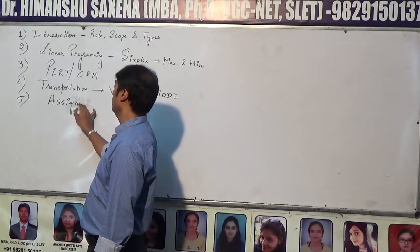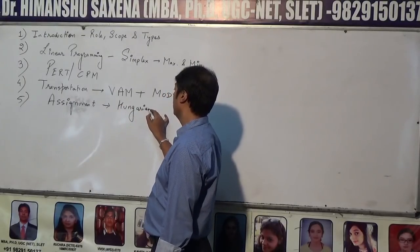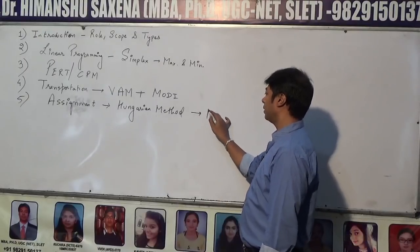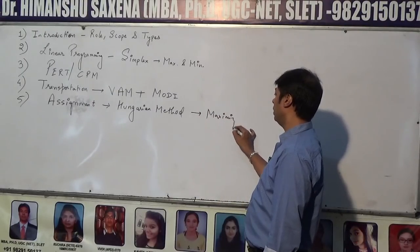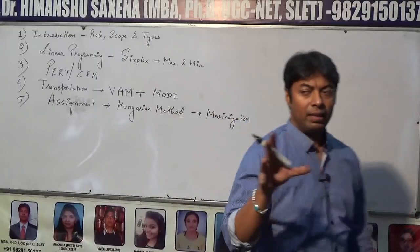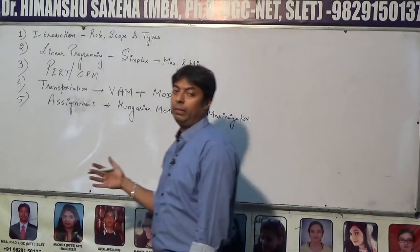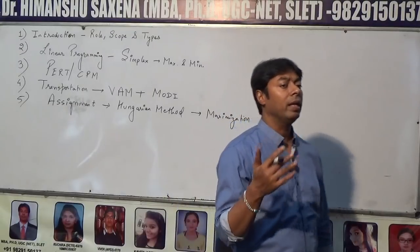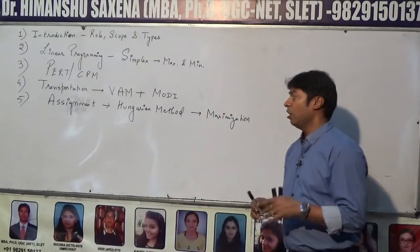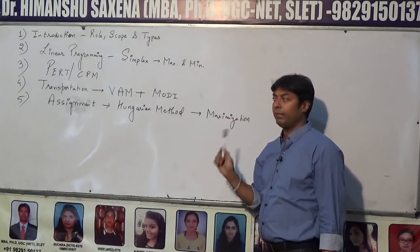The assignment model is based on the Hungarian method. In the Hungarian method, the maximization case is the most important one. We convert the maximization case into a minimization case by selecting the maximum element and subtracting all elements from it, then solving it normally by applying row operations, column operations, drawing lines, assigning zeros, and finding the optimum solution.